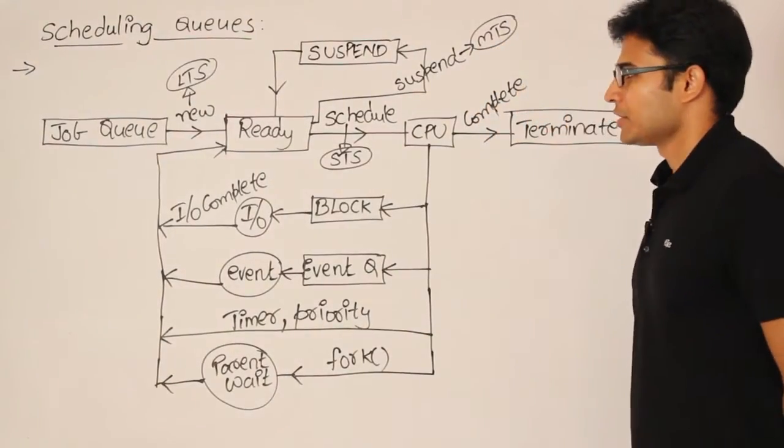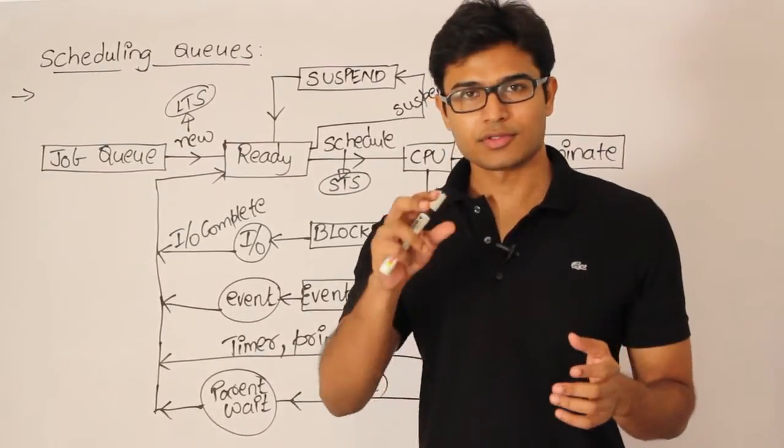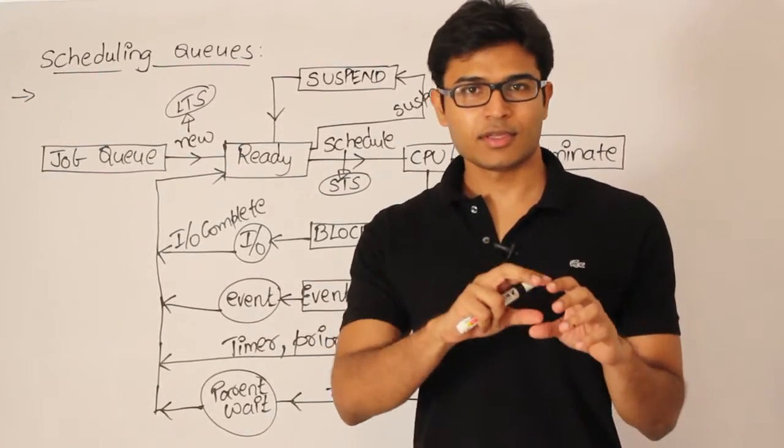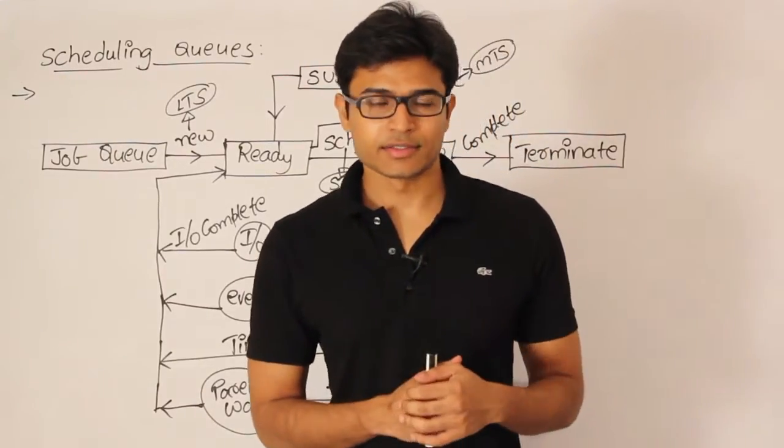When the processes are present in these states, they are actually represented in a queue. So all the processes will be taken, and whenever they move into a state, they will be added to a particular queue. And these queues are implemented as linked lists.